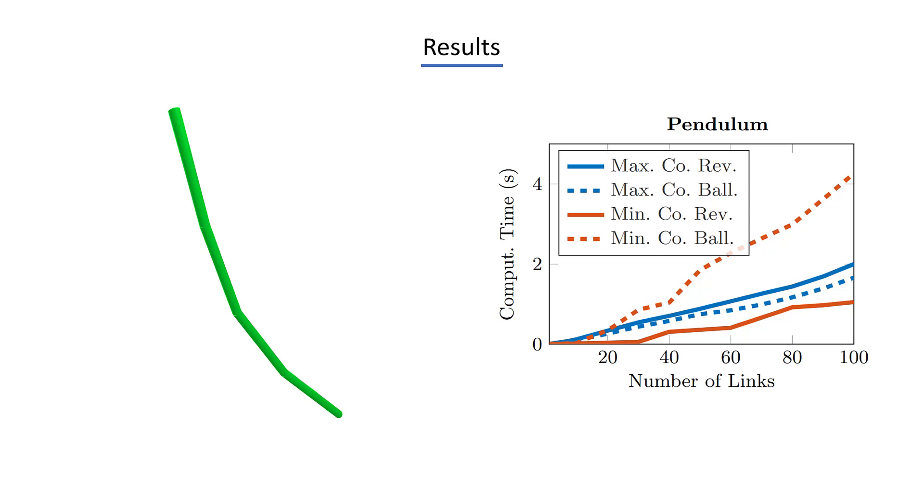On the other hand, if we use ball and socket joints with three degrees of freedom, with maximal coordinates, we perform better than before, because we have less constraints to take care of, whereas the minimal coordinate algorithm now is a lot slower. To us, the main conclusion from these results is that maximal coordinates are generally totally competitive to minimal coordinates, and not just a niche solution for specialized situations.